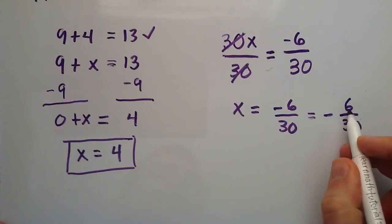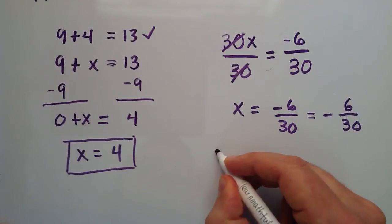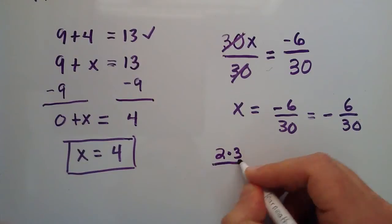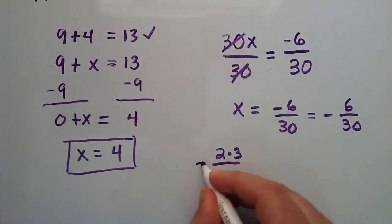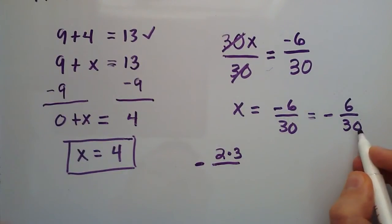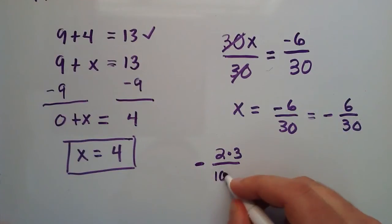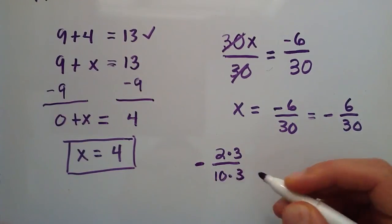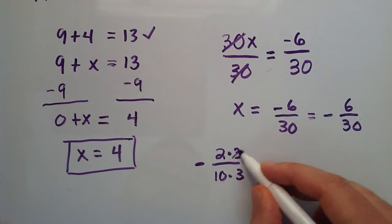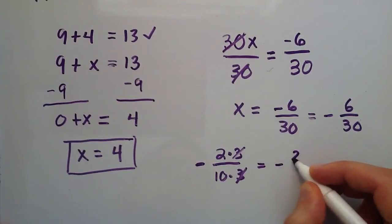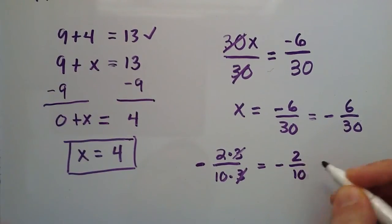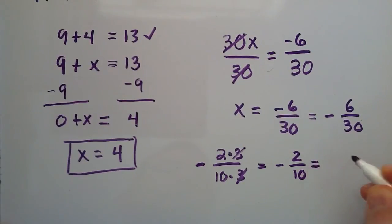6 is equal to 2 times 3. So, we'll just write 2 times 3, and then that's over top of 30. Don't forget the negative sign. And 30 is equal to 10 times 3. So, now we have 3 over 3. That cancels, giving us negative 2 over 10.